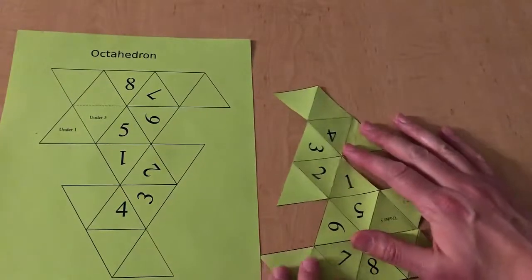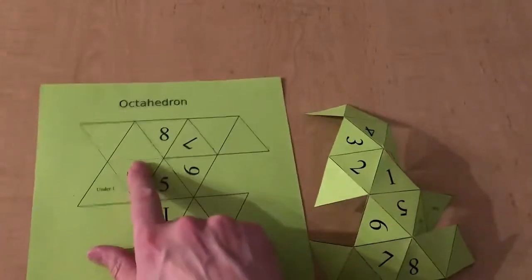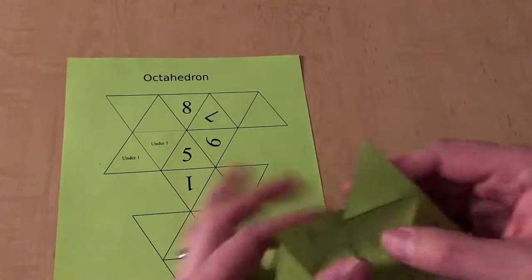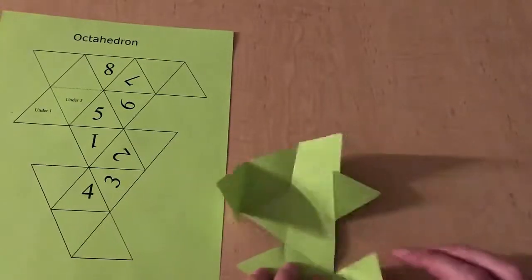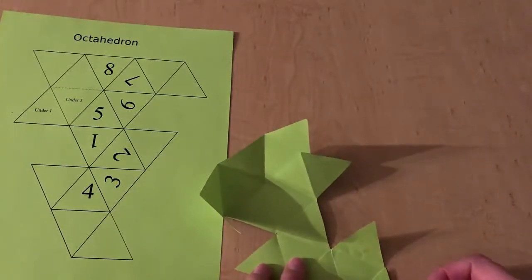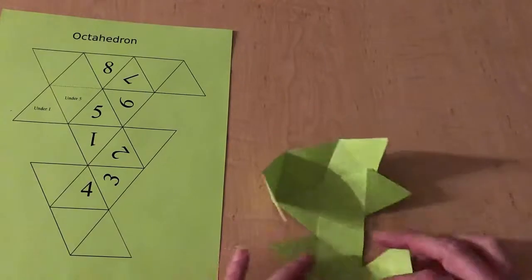And on the dotted line you're gonna go ahead and cut that as well. Then you want to turn the model over and fold along every crease to create the triangles, all folded in the same direction. I've already done that here except for the final tabs.